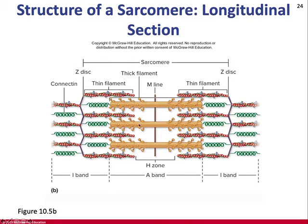When contraction occurs: calcium binds the troponin, tropomyosin pivots out of the way, ATP binds the myosin head and activates it, allowing the head to reach up and grip the actin and pull it towards the middle of the sarcomere. That shortens the sarcomere, which shortens the myofibril. Because it's attached to connective tissue that's attached to the sarcolemma, the shortening of the muscle cell pulls on connective tissue outside the muscle cell, transferring that force from the sarcomere through the proteins inside the muscle cell, to the membrane, to the endomysium and perimysium.